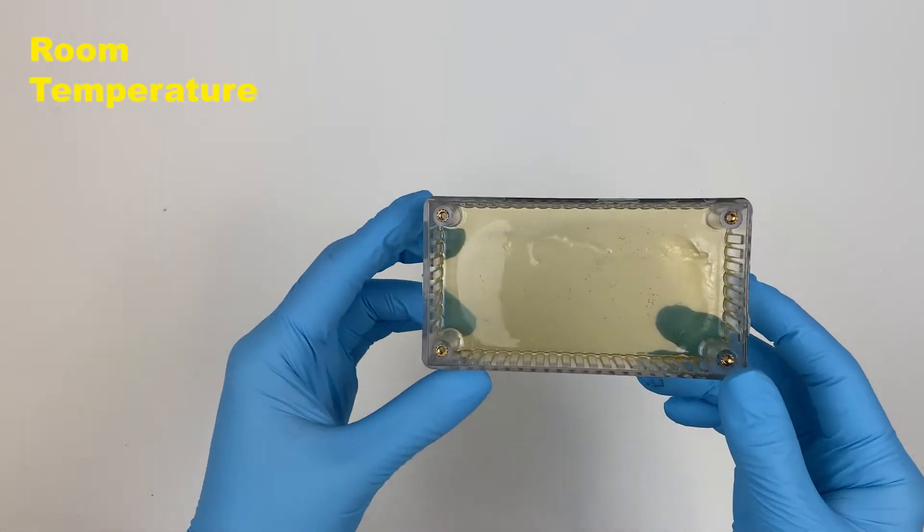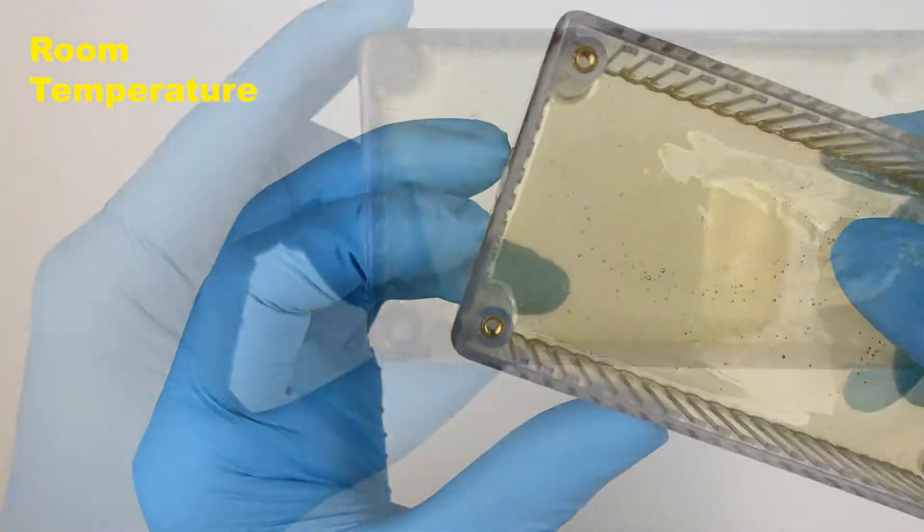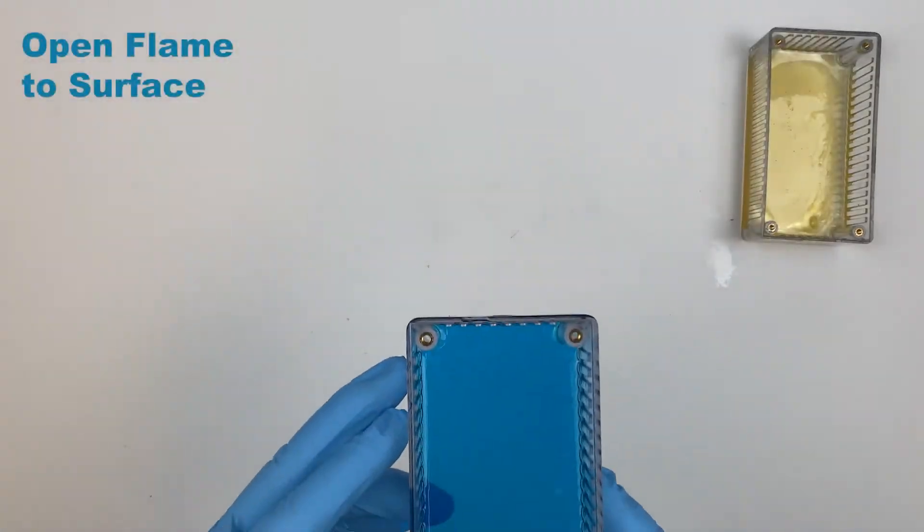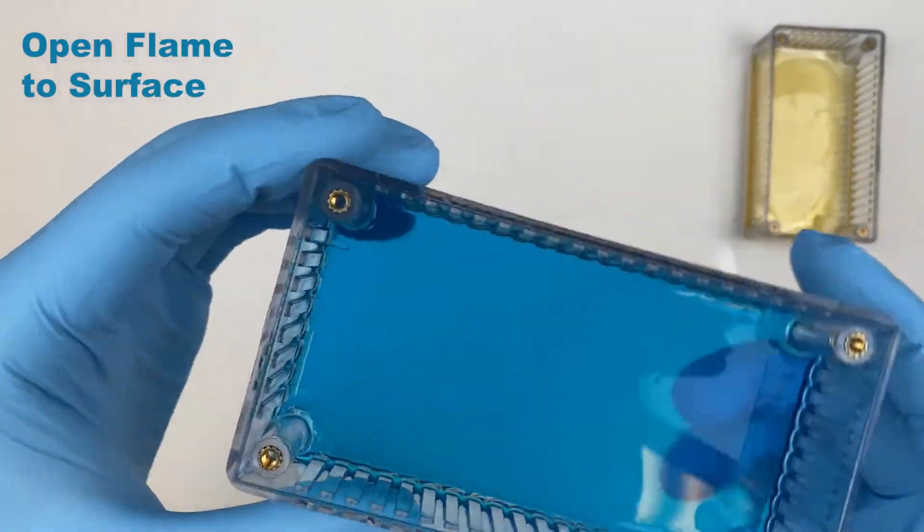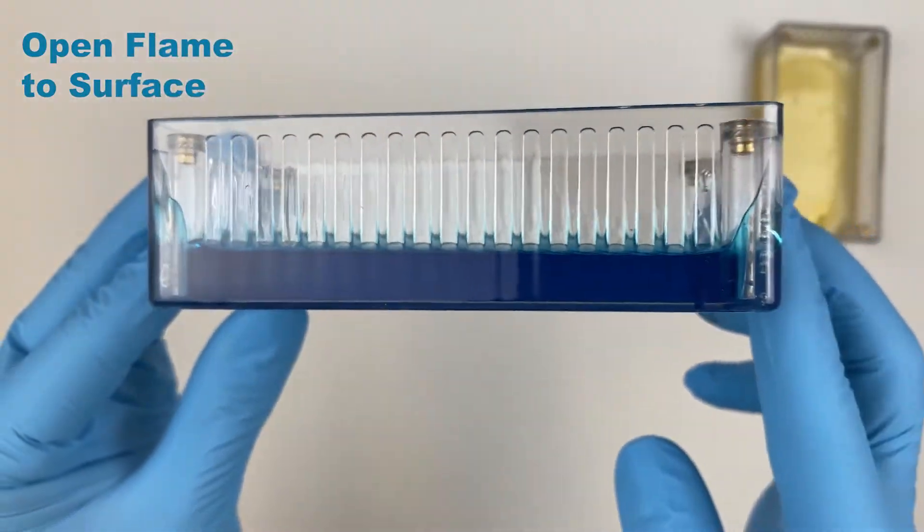Now for the results. We see our first sample, the control with no intervention, still has lots of bubbles embedded within it. Sample 2 which used the flame worked very well to remove the air, giving the cured sample a nice smooth appearance.